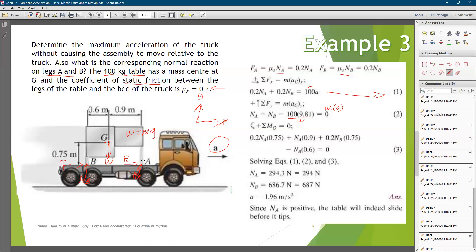First at point A, where we have the μ times N_A, that is the friction force here, times 0.75, because we know that from point A to G here, the perpendicular distance is 0.75.